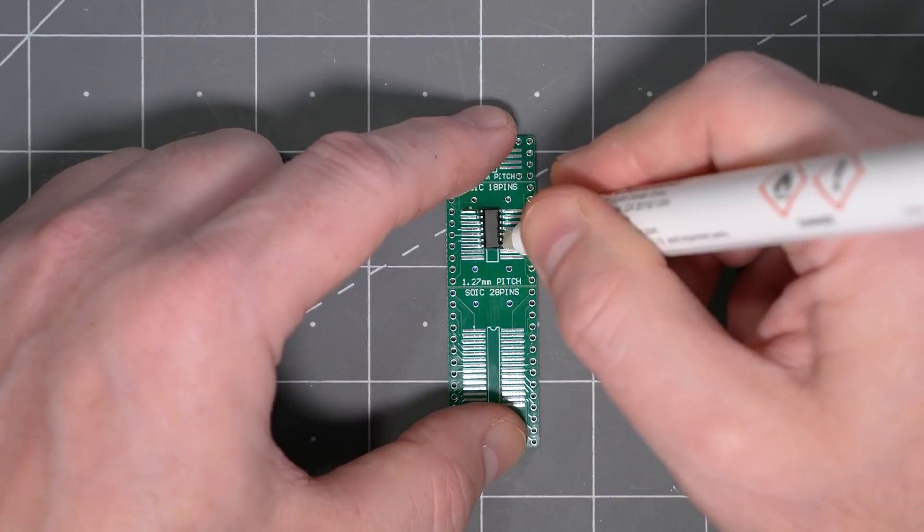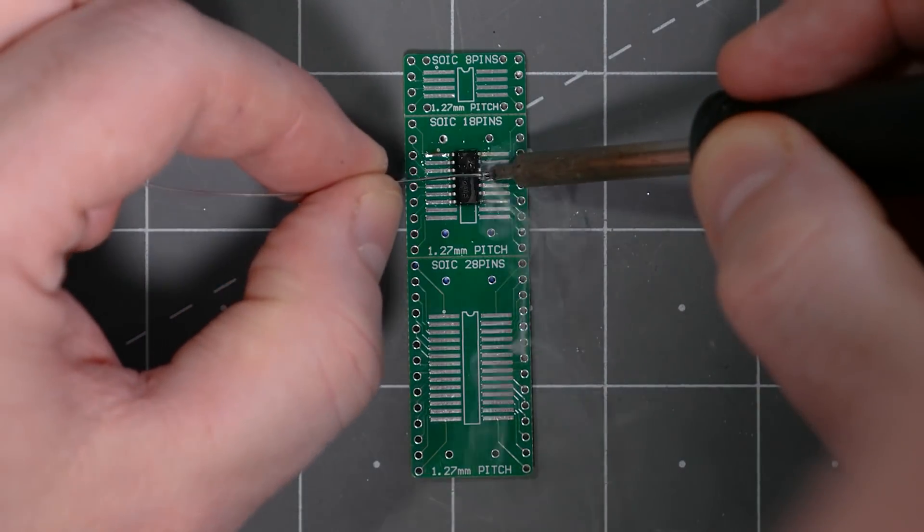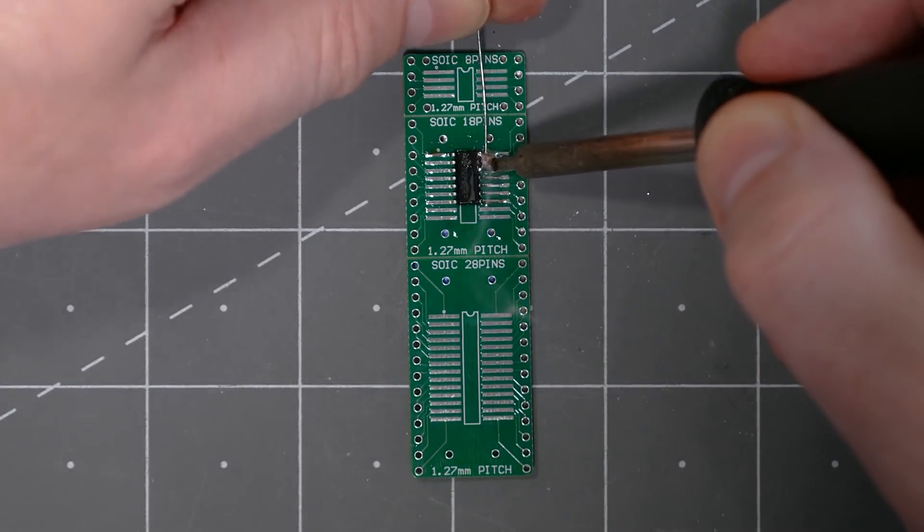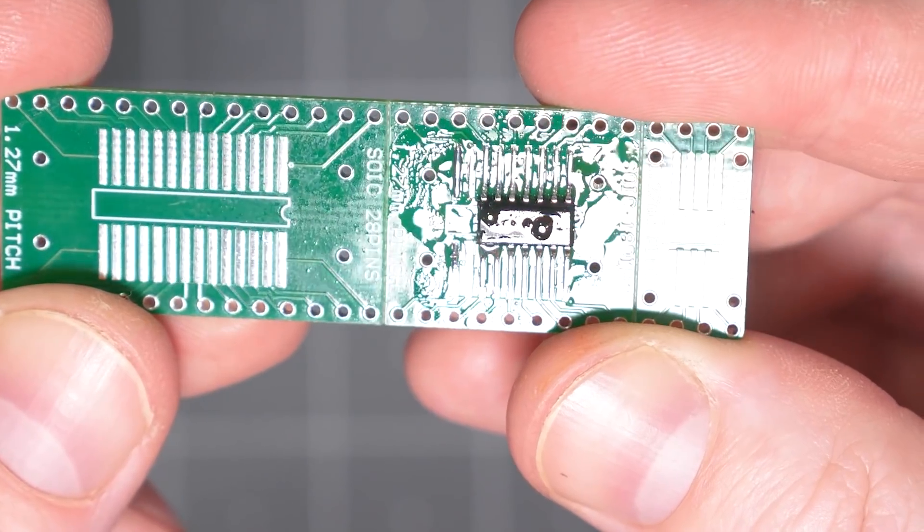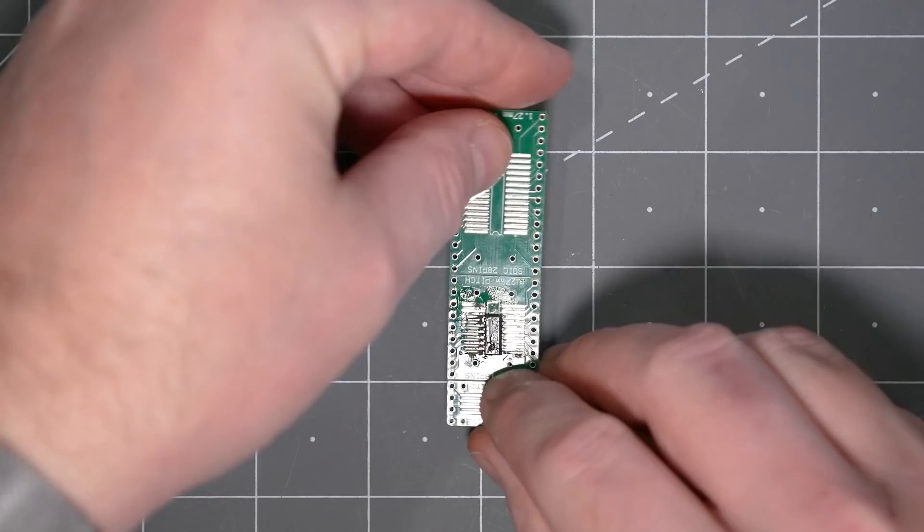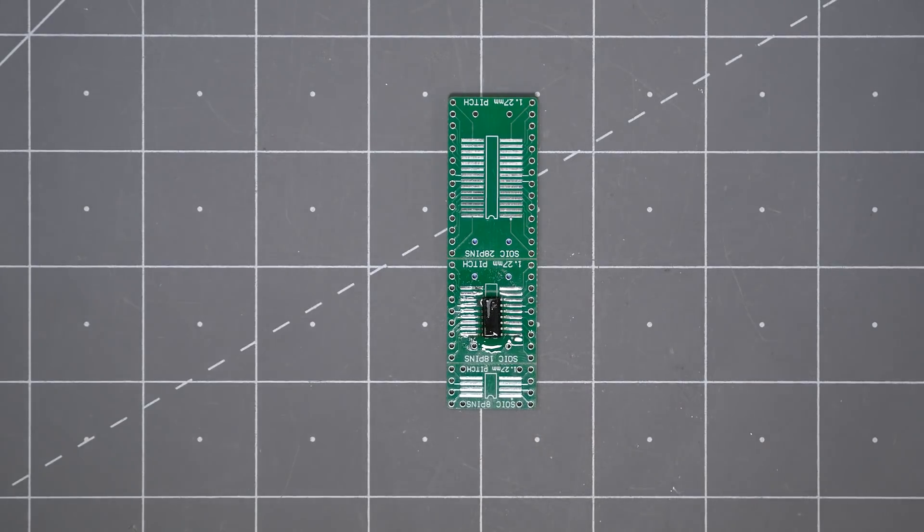Now, I put flux on one side of the IC, and finally comes the drag soldering part, where I literally drag the soldering iron and my wire solder across all of the pins of the IC. And, once that side is done, I apply flux to the other side and repeat the drag process.